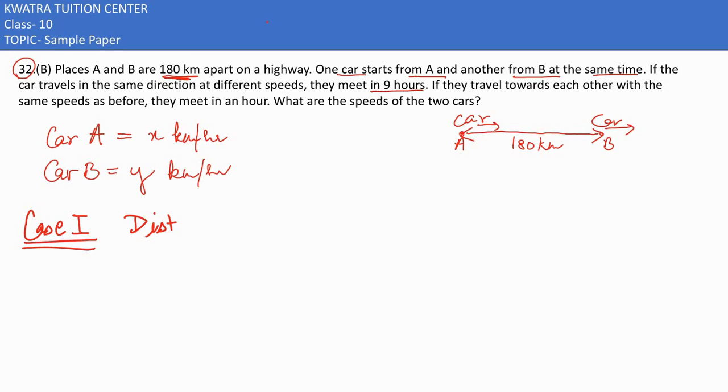As we know, speed equals distance over time, so distance equals speed times time. The distance traveled by A would be speed times time, which is x times 9, so it would be 9x.